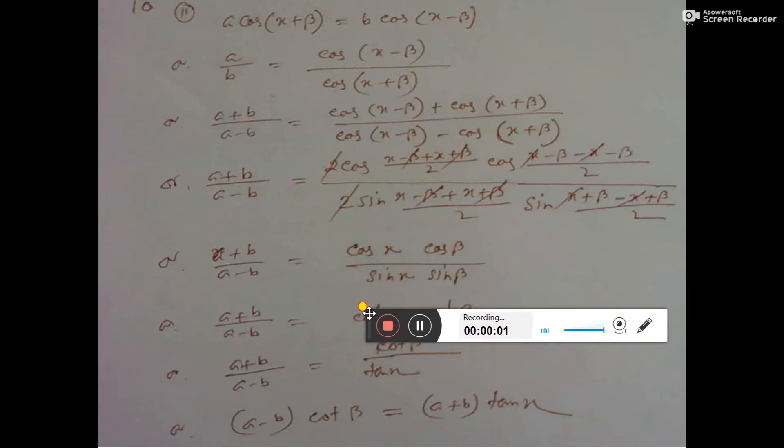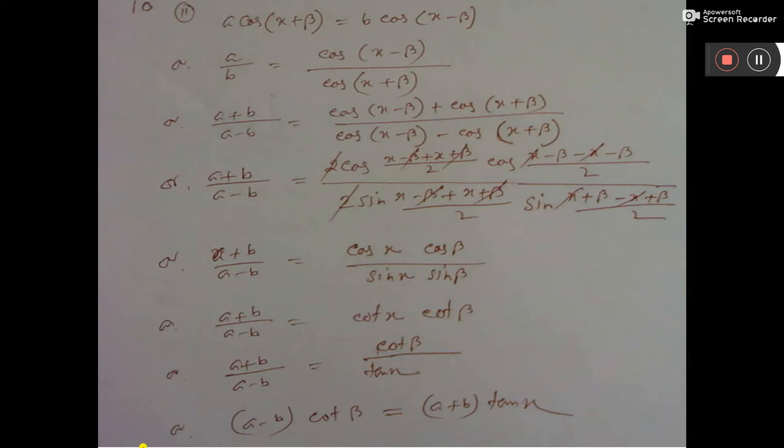In this question, number 10, I have to prove that cos(x+β) equals B cos(x-β). If it is this, then we have to prove that (A-B)cos β equals (A+B)tan x.